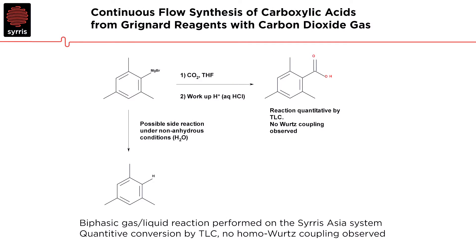In this reaction we're taking our Grignard reaction, which is this 2-mesotolyl-magnesium-bromide. We're going to introduce carbon dioxide in a biphasic gas-liquid partition, and acidify to form our acid.